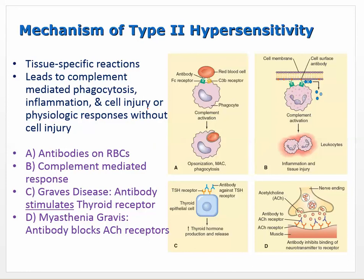Mechanism of type 2 - tissue specific. That means there is a particular cell or protein on a cell the immune system recognizes. An example is antibodies made against a certain collagen protein found only in the lungs and kidneys. For whatever reason, the immune system produces antibodies against those specific tissues - kidneys and lungs specifically, at the glomerulus. That's Goodpasture syndrome - tissue specific reaction leading to complement mediated phagocytosis, inflammation, and cell injury.